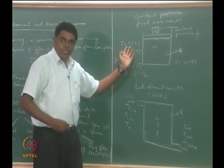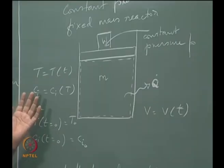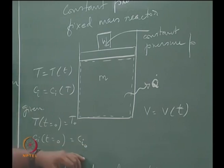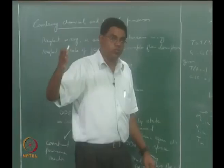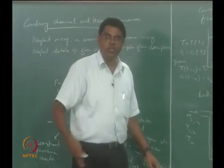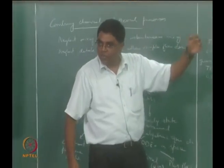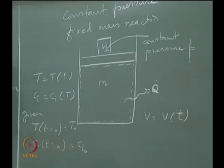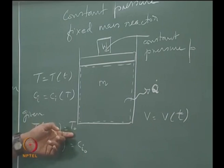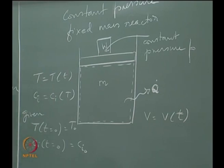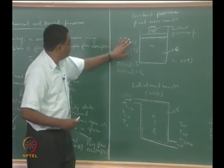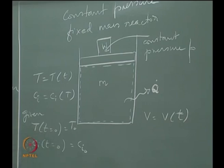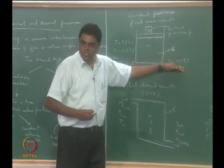Our interest is to write ODEs in temperature and concentrations of species — the time evolution of concentrations. If we start with initial species concentrations C_i0 for i going from 1 to N, we start with non-zero values for reactants and zeros for intermediates and products. We set an initial temperature, then integrate the ODE system in time to get the evolution, and as an offshoot also find how volume changes in time.